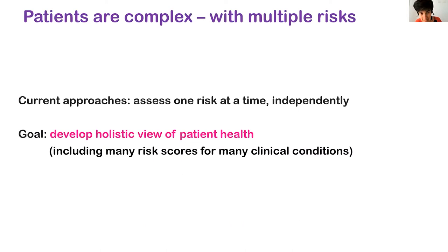A patient may often have multiple risks over time. The current approach is to assess one risk at a time, independently. Ideally, you'd want to develop a holistic view of patient health — both for patients not yet diagnosed and for those already diagnosed with a particular disease who may be at risk for other conditions. The goal is to build many risk scores that are trustworthy and actionable.